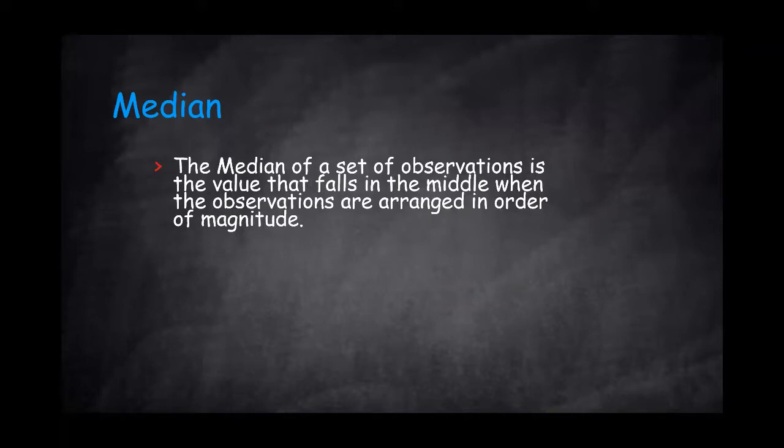The median of the set of observations is the value that falls in the middle when the observations are arranged in order of magnitude.